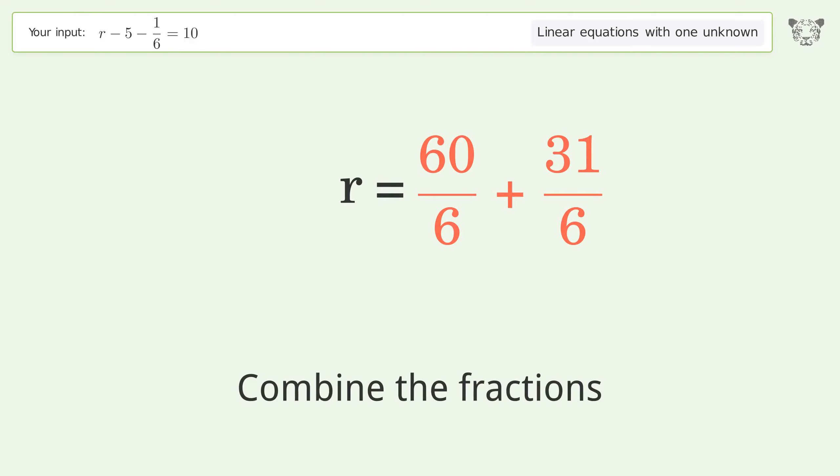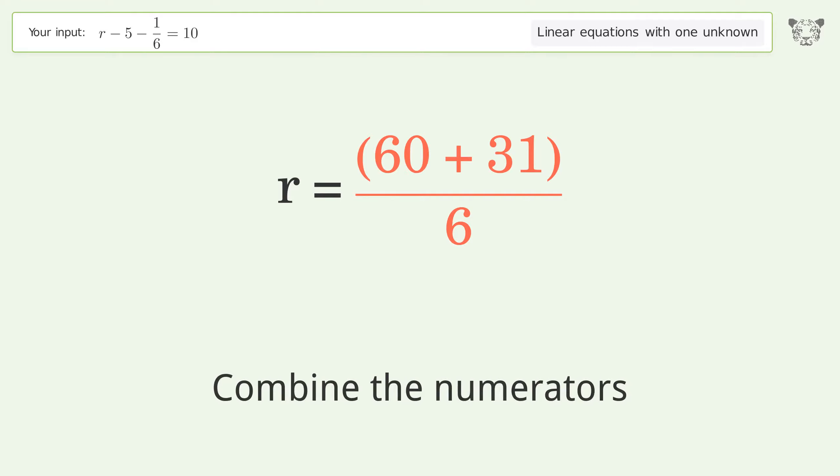Combine the fractions. Combine the numerators. And so the final result is r equals 91 over 6.